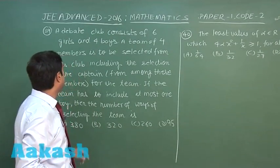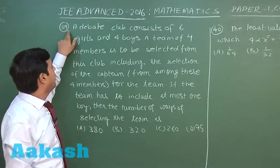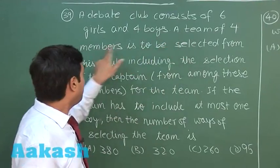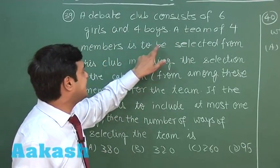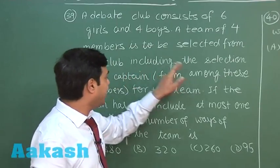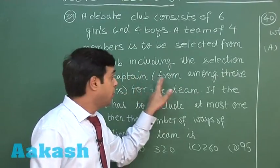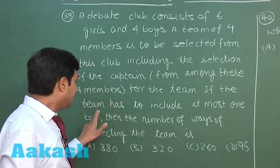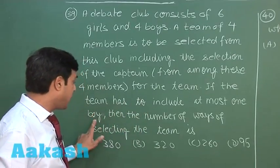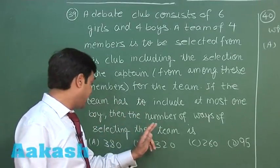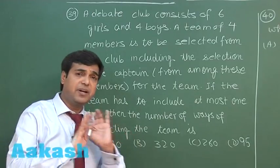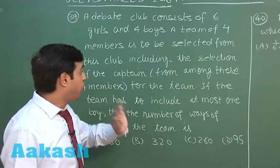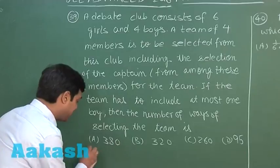Let's take question number 39. A debate club consists of six girls and four boys. A team of four members is to be selected from this club, including the selection of a captain from among these four members. If the team has to include at most one boy, then the number of ways of selecting the team is to be found. This is a straightforward PnC question — we have to select a team of four including at most one boy.